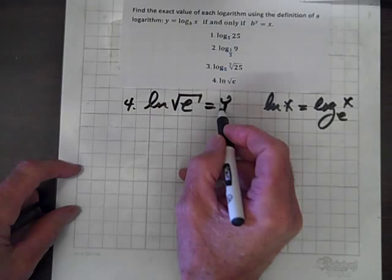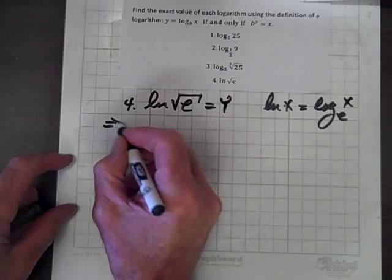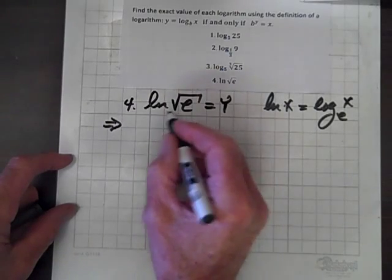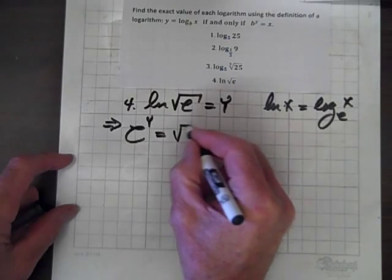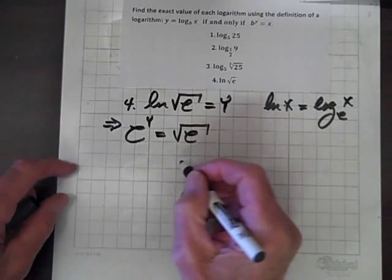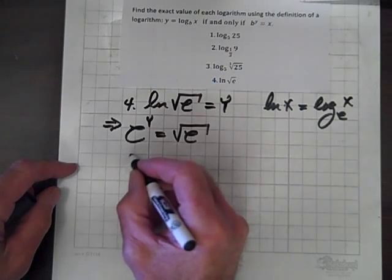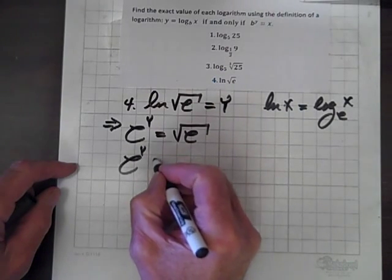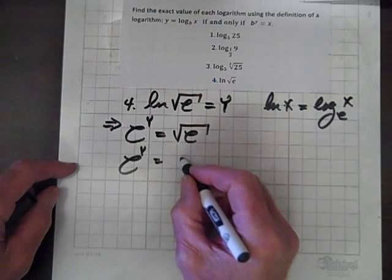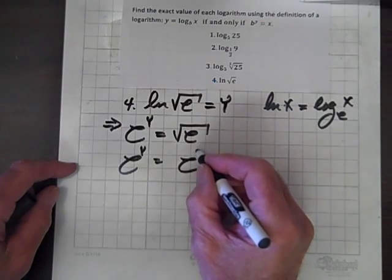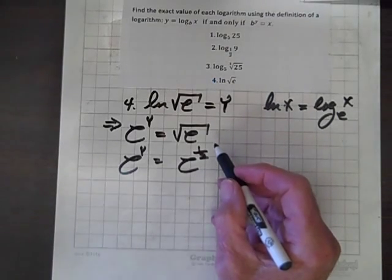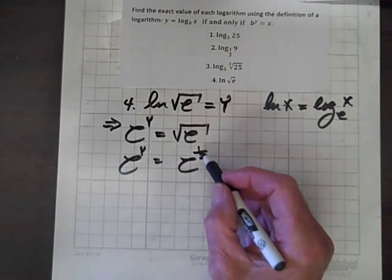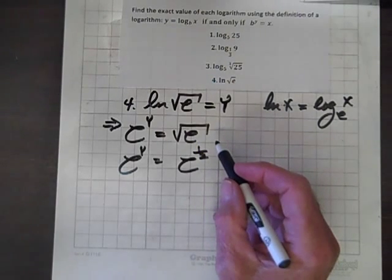Let's rewrite this in exponential form. This implies that the base is e, the exponent is y, and the result is the square root of e. So e to the y equals — we can remove the radical as long as we install the exponent of 1/2, because e to the 1/2 power equals the square root of e.